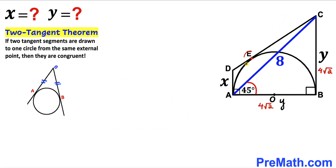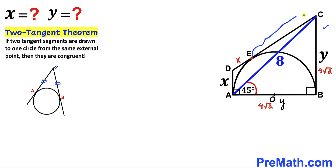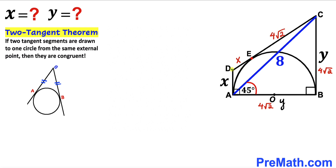Point E is a point of tangency, so segment AD equals segment DE. If AD is X, then DE is X as well. Applying the two-tangent theorem again, segment EC equals segment BC = 4√2. Therefore the whole side CD equals X + 4√2.